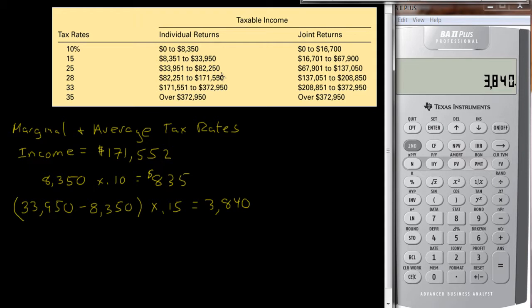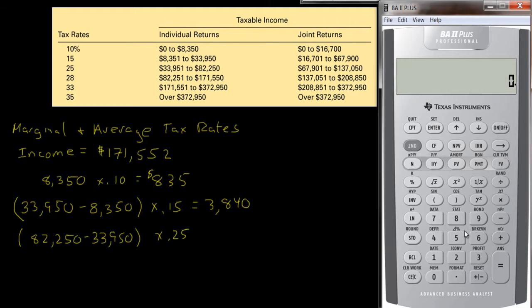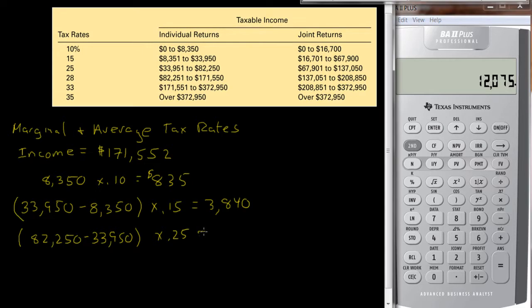And then between $33,951 and $82,250, they'll be taxed at 25%, so we have to figure out how much that is there. That's $82,250 minus $33,950, and that's going to be taxed at 25%. So $82,250 minus $33,950, so this $48,300 will be taxed at 25%, so multiply by .25, so they're going to pay $12,075.